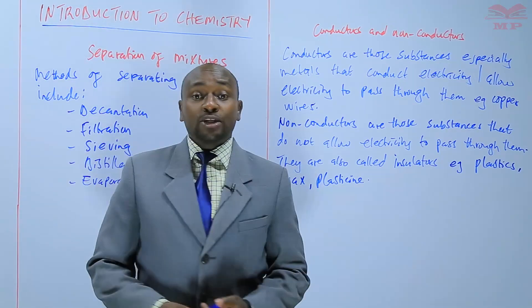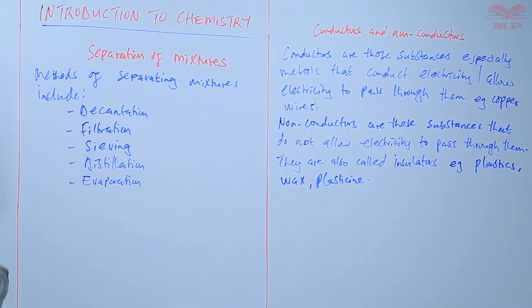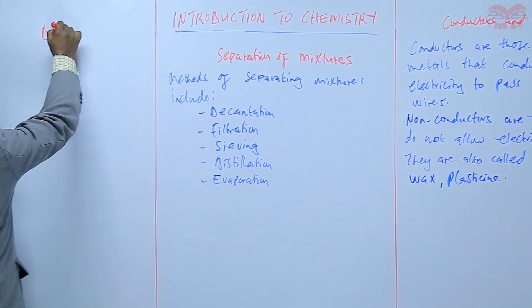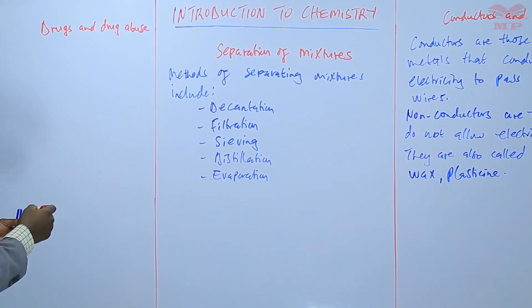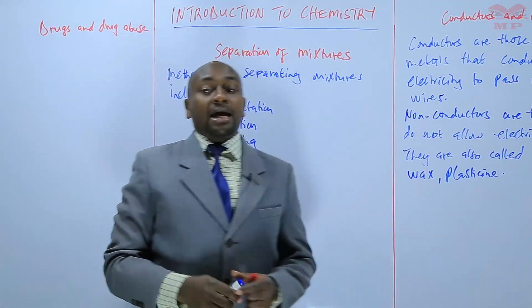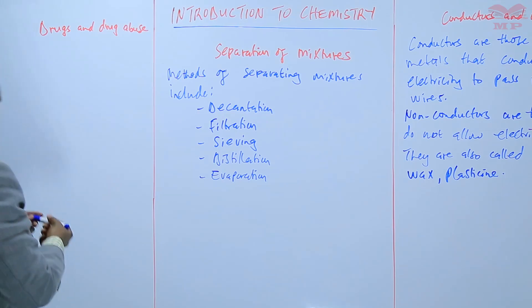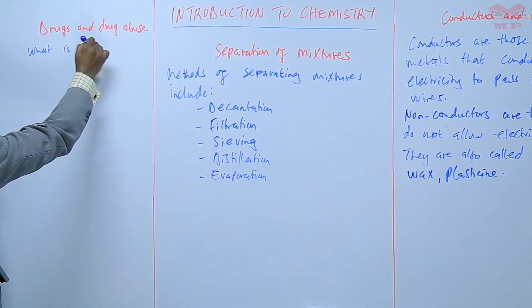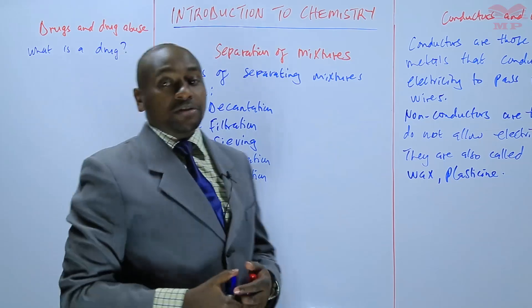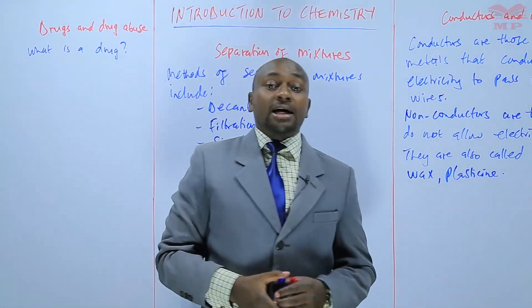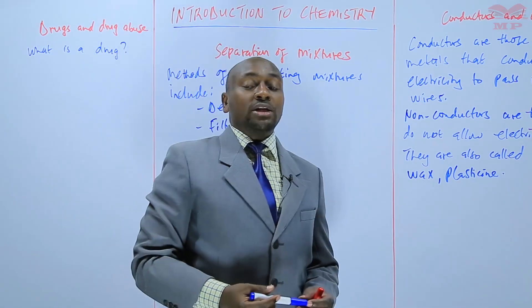Then the other area that we are going to review is the issue of drugs and drug abuse. This is another area that was learned in primary science and it entails chemistry or the application of chemistry. We want to ask ourselves, what is a drug? We have different kinds of drugs, some that are used for medical purposes, others for leisure purposes. But basically, we need to understand what is a drug.